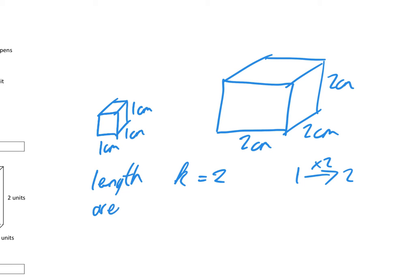For area, k squared: the area of the face on the small cube is 1 times 1, which is 1 cm². The area of the face on the large cube is 2 times 2, which is 4 cm². So my scale factor for area — I go from 1 cm² to 4 cm² by multiplying by 2 squared, which gives you 4. So the scale factor for area is 2 squared.